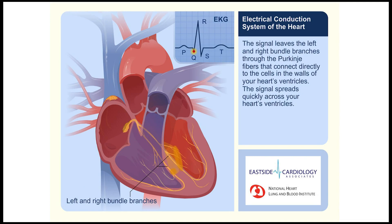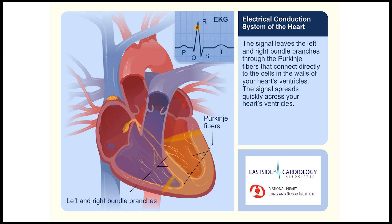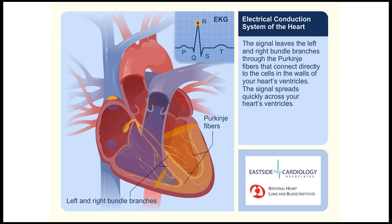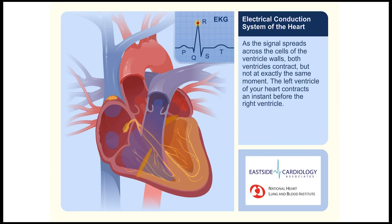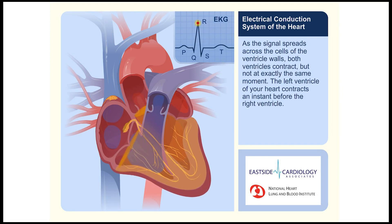The signal leaves the left and right bundle branches through the Purkinje fibers that connect directly to the cells in the walls of your heart's ventricles. The signal spreads quickly across your heart's ventricles. As the signal spreads across the cells of the ventricle walls, both ventricles contract, but not exactly at the same moment.